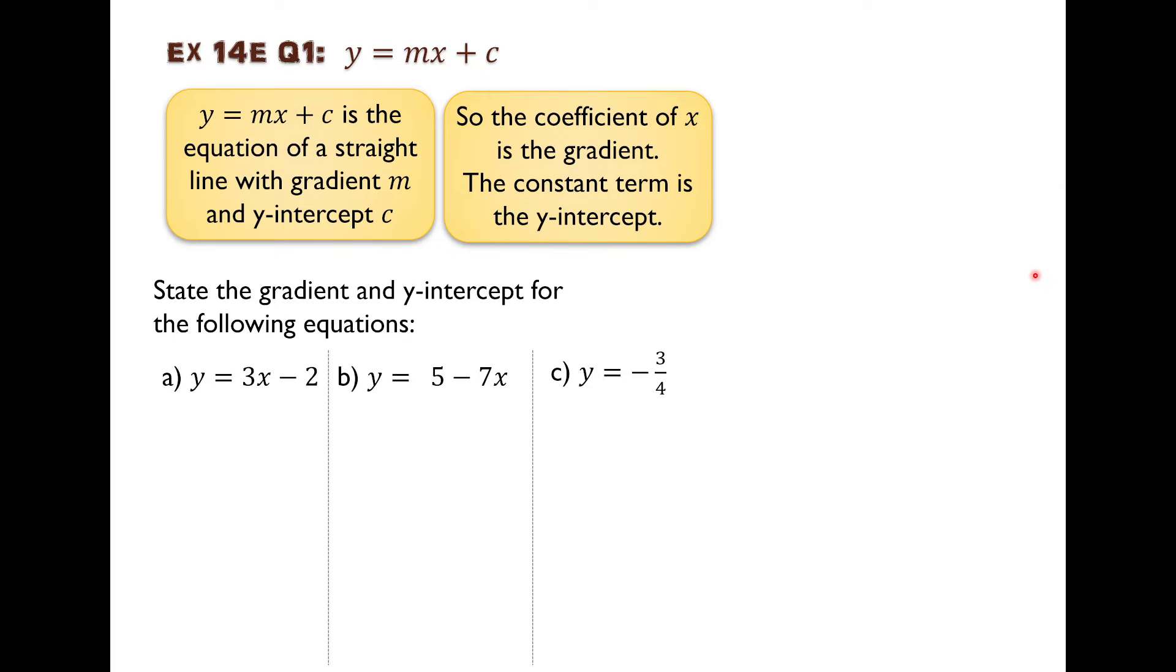We've been looking at a lot of straight lines in this chapter. And what if I told you that every straight line that you could possibly draw on the Cartesian plane looks like this: y equals mx plus c. So this is the equation of all straight lines, any straight line, and m is the gradient and c is the y-intercept.